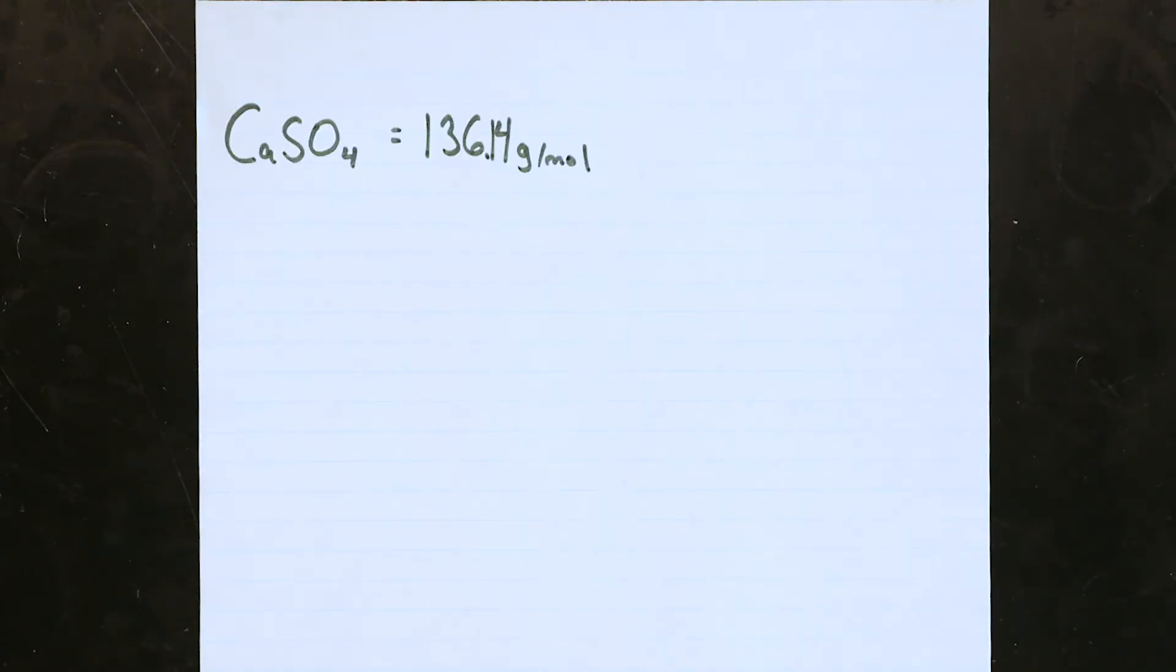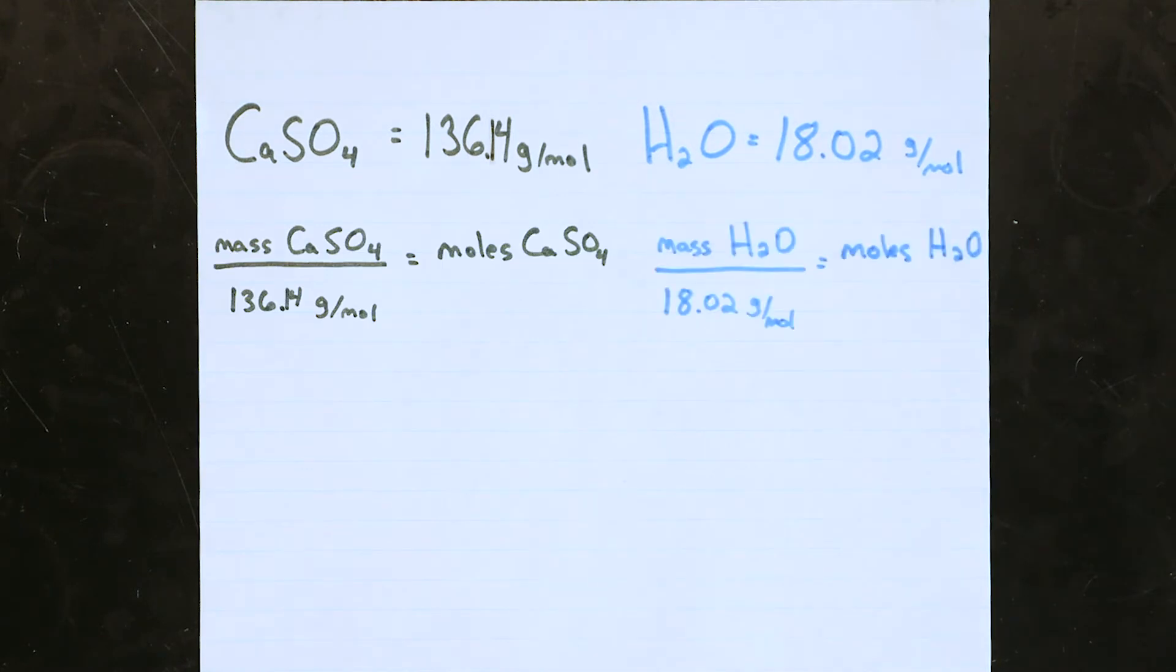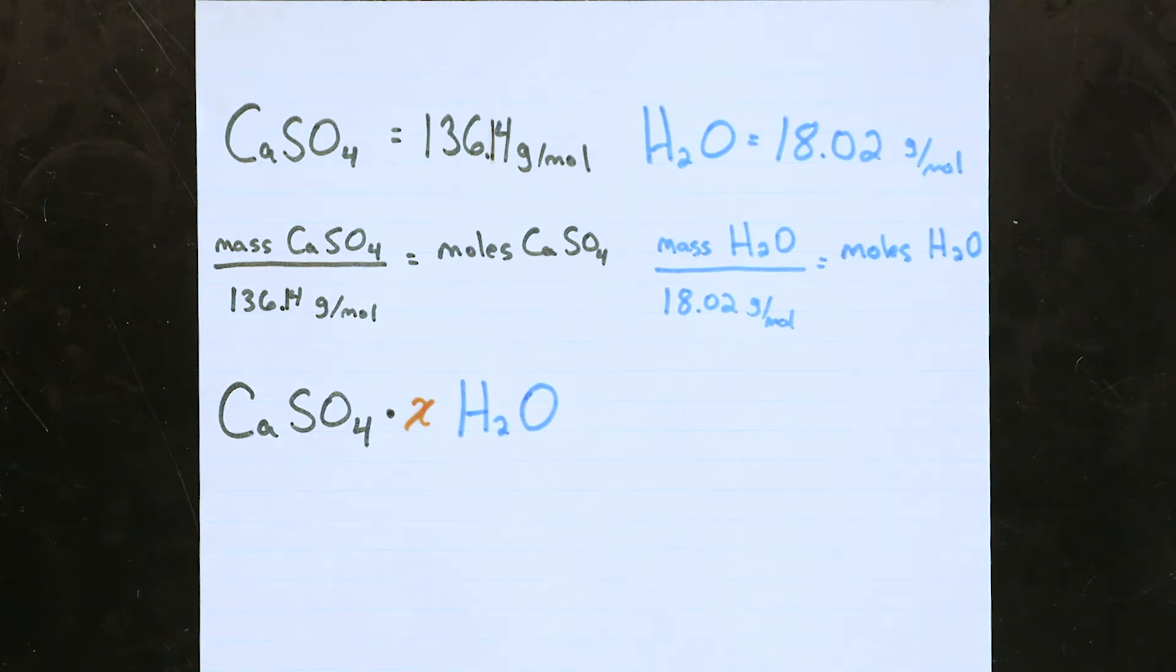Since we know the formula weights of calcium sulfate and water, we can calculate how many moles of each we had. The law of multiple proportions tells us that the number of moles of water will be some multiple of the number of moles of calcium sulfate. If they're the same number, then there is only one water for every calcium sulfate.